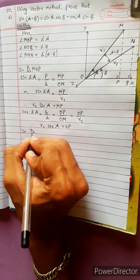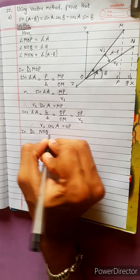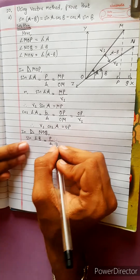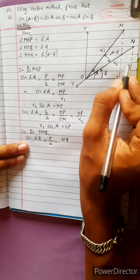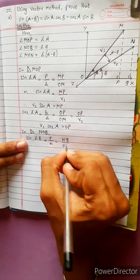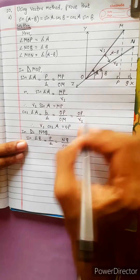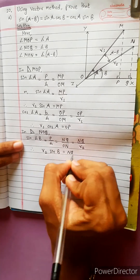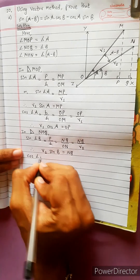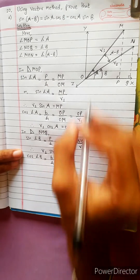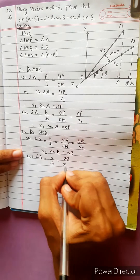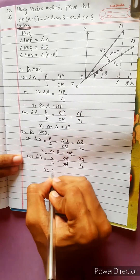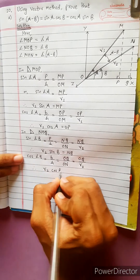In triangle NOQ, sin angle B equals perpendicular NQ divided by hypotenuse ON. Letting ON equal R2, therefore R2 sinB equals NQ. For cosine, cos angle B equals base OQ divided by hypotenuse ON, so R2 cosB equals OQ.